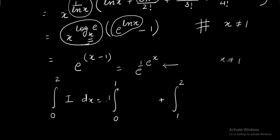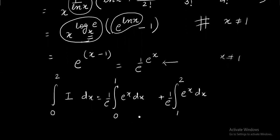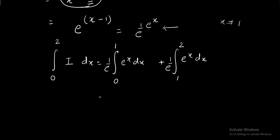What about 0 to 1? It is 1 upon e, e^x dx. 1 to 2, 1 upon e, e^x dx. Integrating it putting the limits gives me the answer is 1 upon e times e power 1 minus 1 plus e raised to the power 2 minus e power 1. Ultimately when you shift 1 upon e inside the bracket the answer turns out to be e minus 1 upon e. So here is the answer for the integration problem.